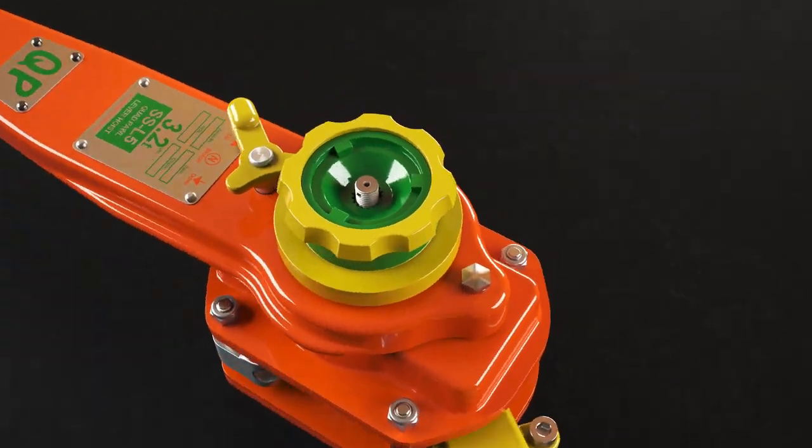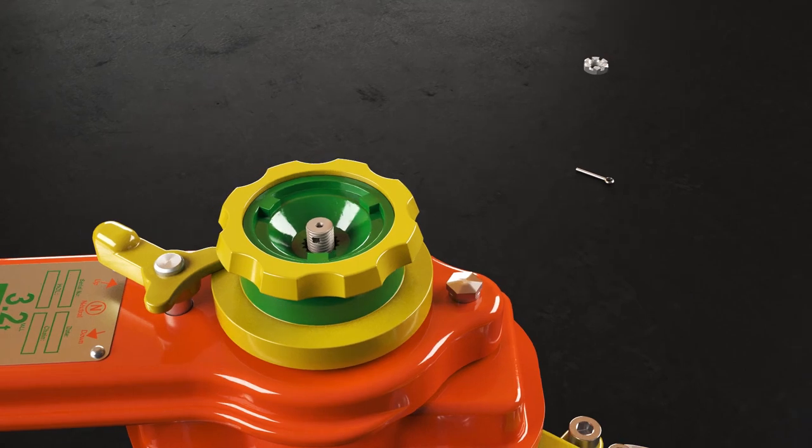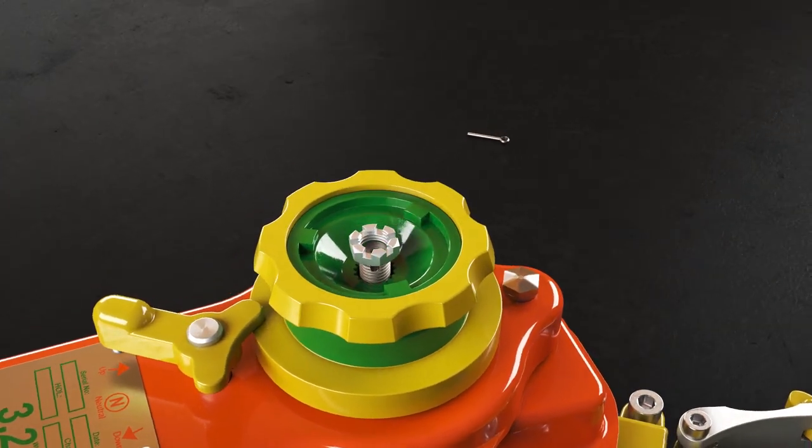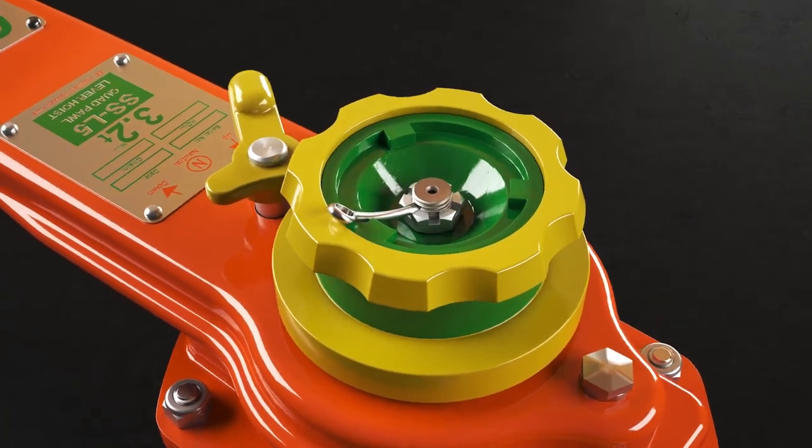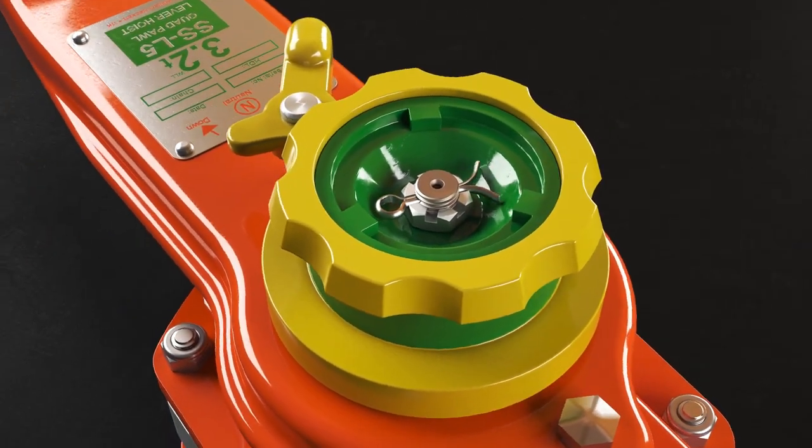Maintain downward pressure on the grip ring insert and secure with the castellated nut. Do not fully tighten. Finally, secure in place with a split pin.